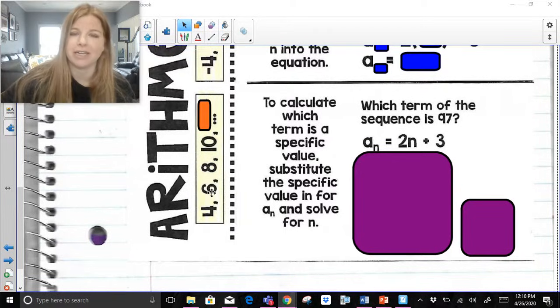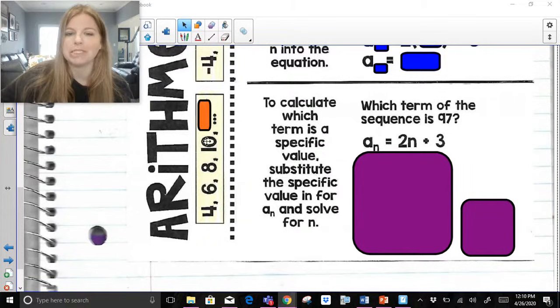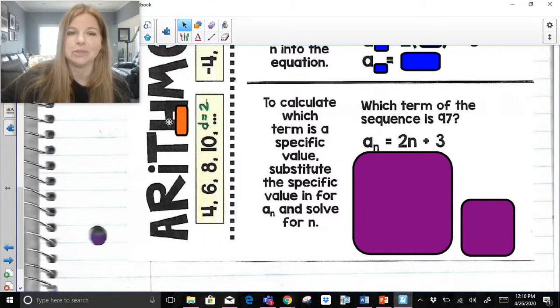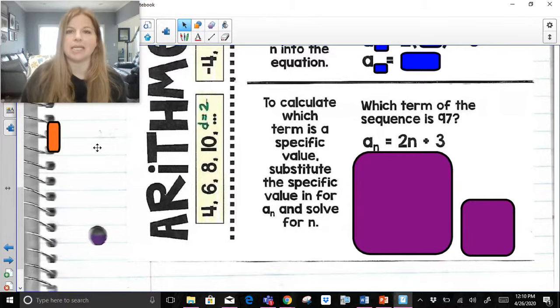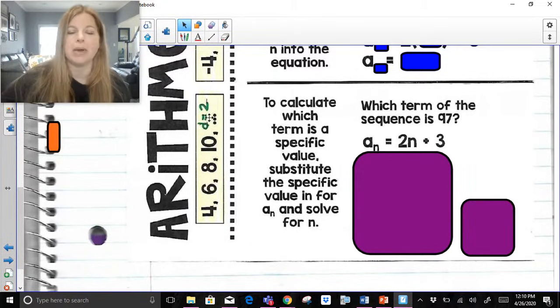So for example here, and I know it's kind of twisted, you may have to turn your head, 4, 6, 8, 10. That's an arithmetic sequence. It's adding by 2. And what we would say is that the common difference, d, the amount that it's increasing by, is a positive 2.